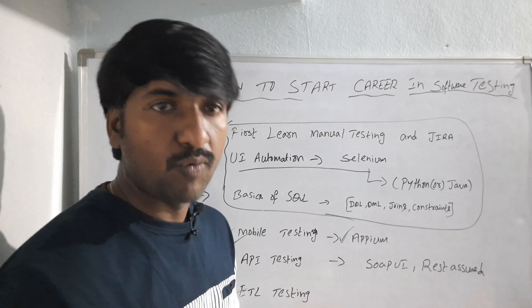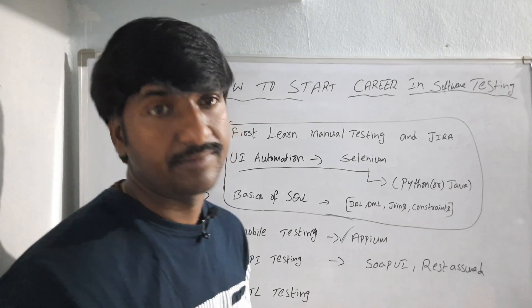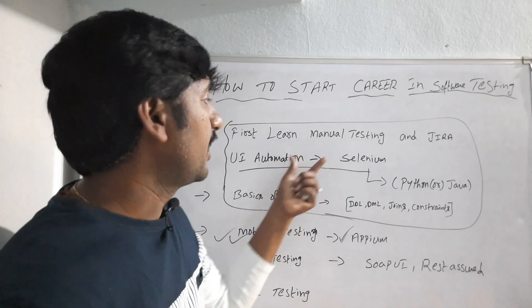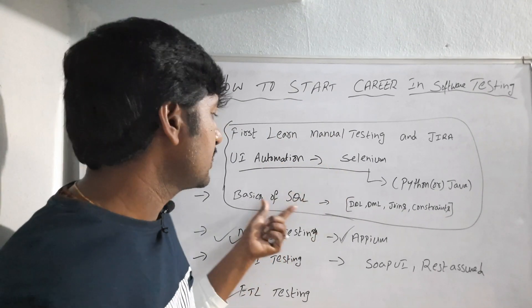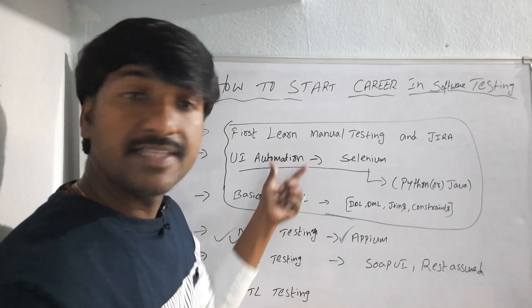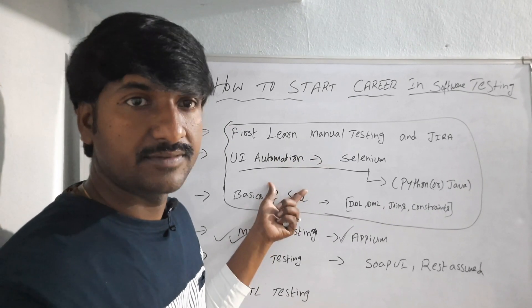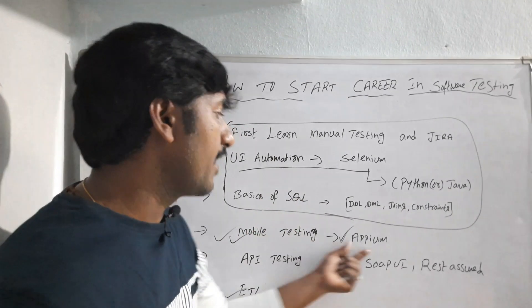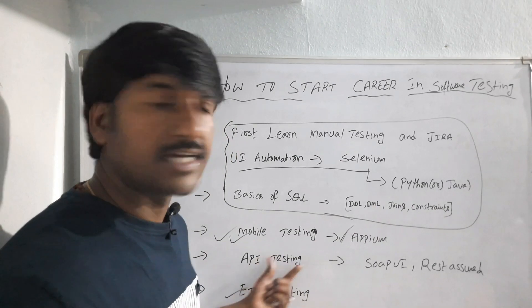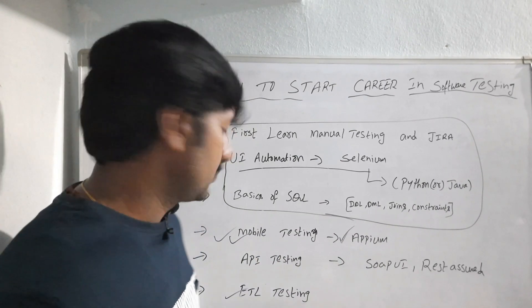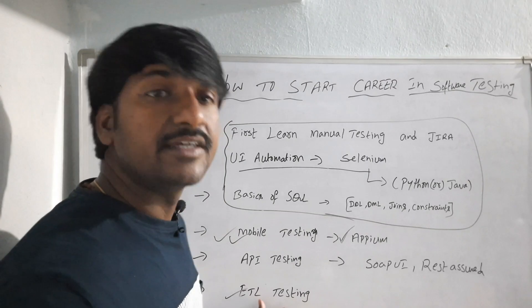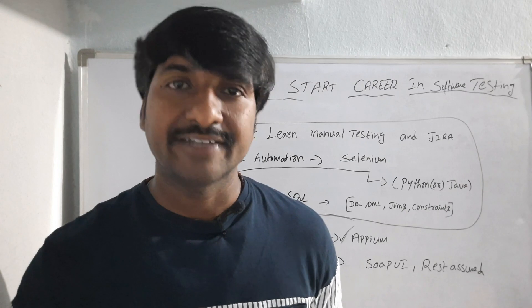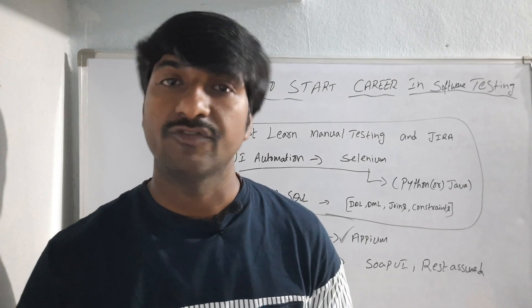So this is the process to start your career and the technologies you should learn. First, learn manual testing, then one UI automation tool like Selenium, and some basic SQL — with these skills you can get into an IT company. After that, keep upgrading your skills with mobile testing using Appium, API testing using SOAP UI or Rest Assured, and if you are interested in database testing, ETL testing. I hope you understand what technologies you should learn to start a career in software testing.